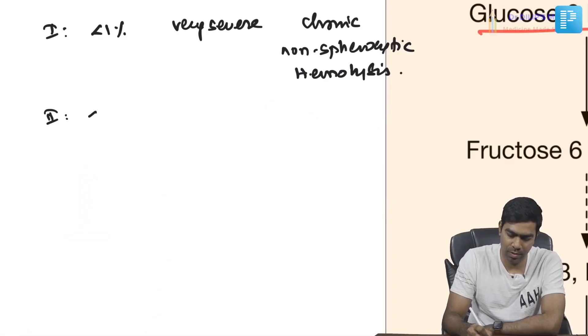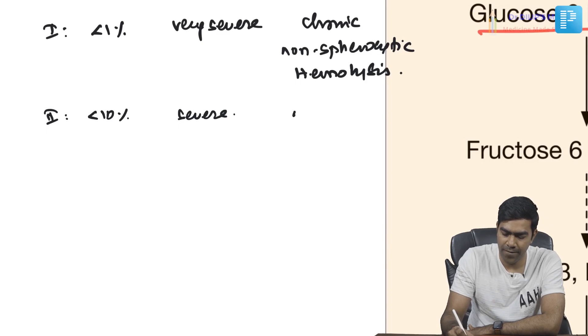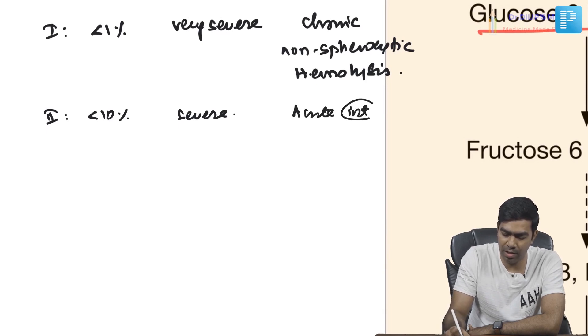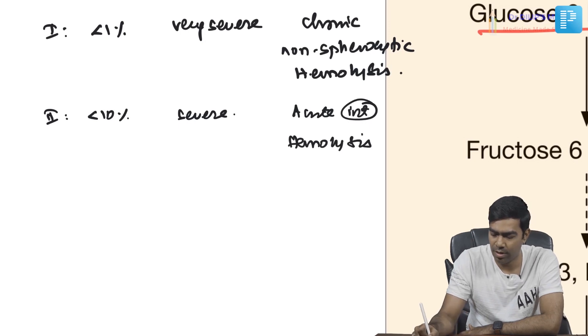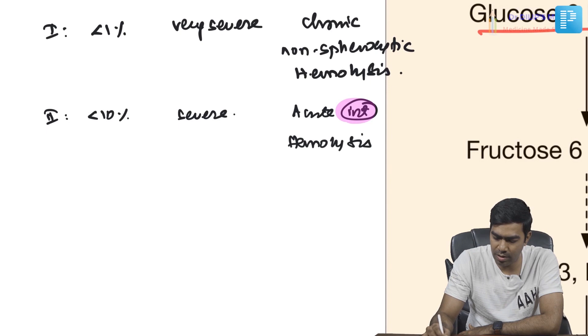Class 1 results in chronic non-spherocytic intravascular hemolysis, with findings such as free hemoglobin in plasma, hemoglobinuria causing dark-colored urine, hemosiderinuria, and over time kidney injury. Class 2 has less than 10% enzyme activity and is considered severe.